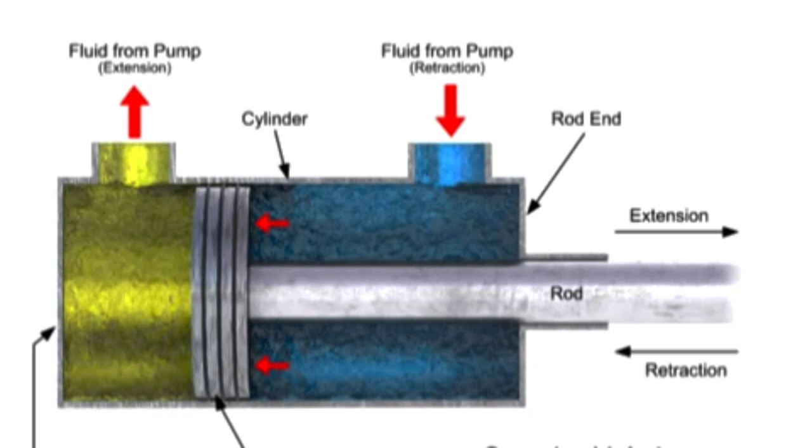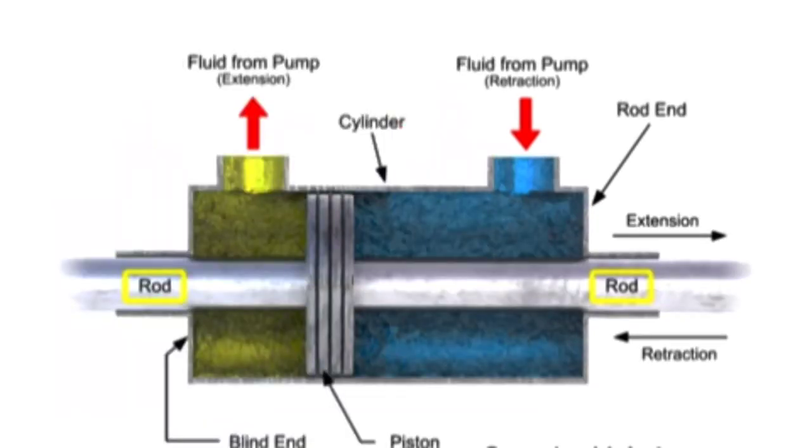All the cylinders shown to this point have been single-ended. They have only one working rod. On special cylinders, two rods may be used. These are called double-ended cylinders.